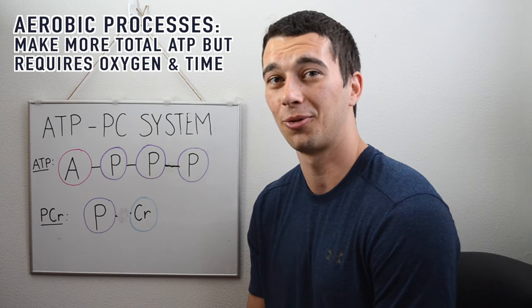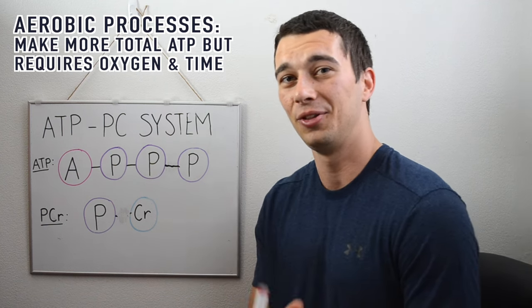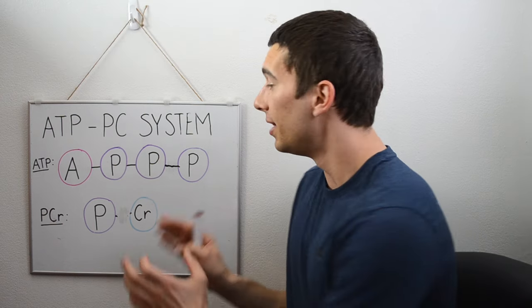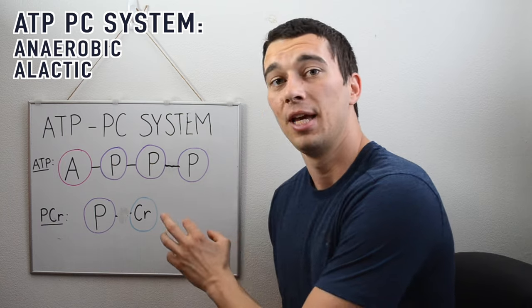The Krebs cycle and oxidative phosphorylation—go ahead and review the bioenergetics video that I have if you want to be more familiar with those processes. So this is an anaerobic and alactic system, meaning that it doesn't require oxygen and it also doesn't produce lactate.